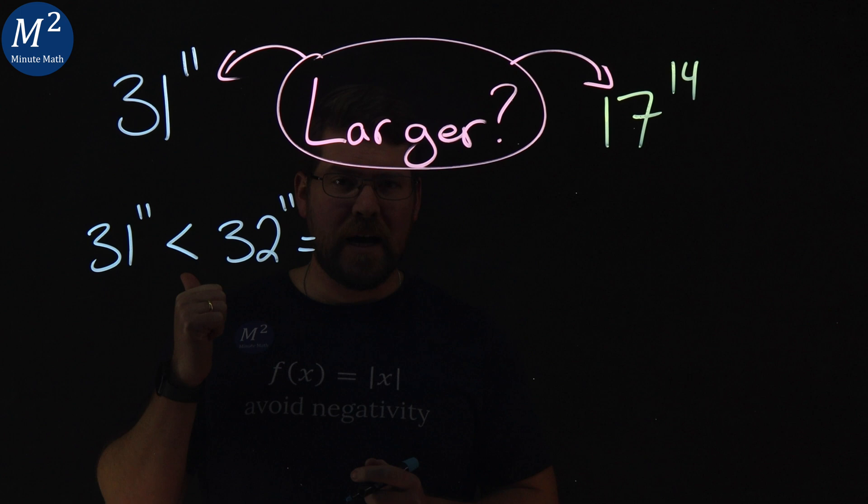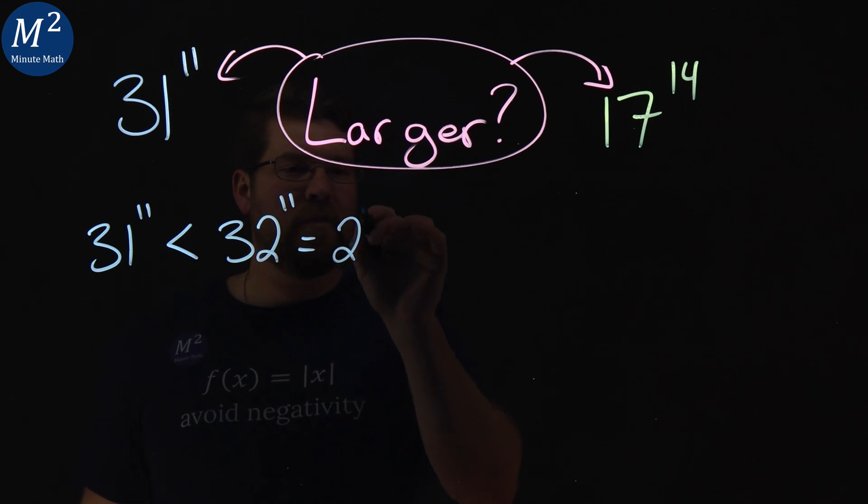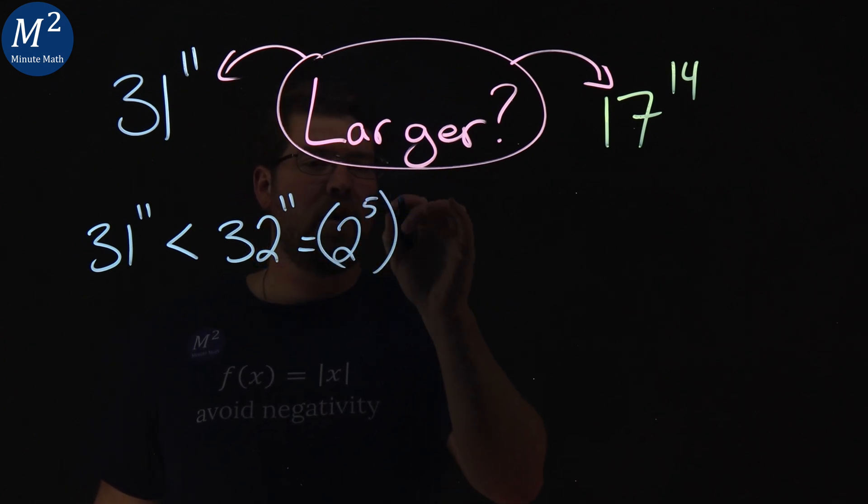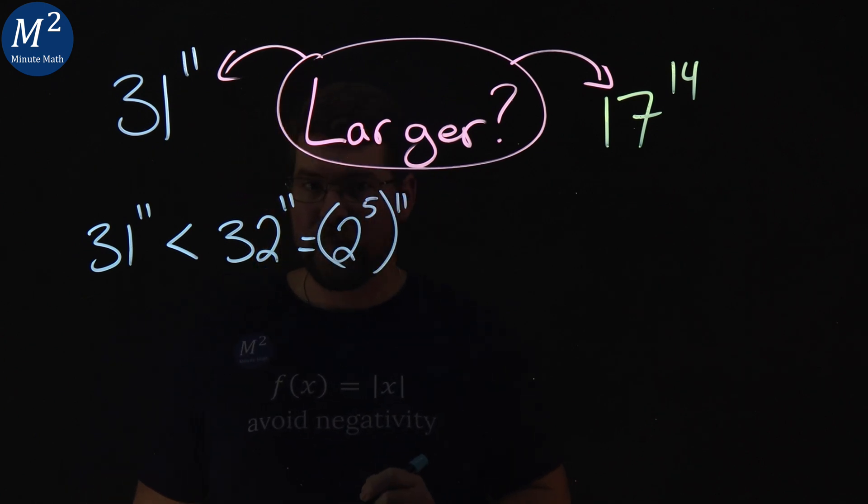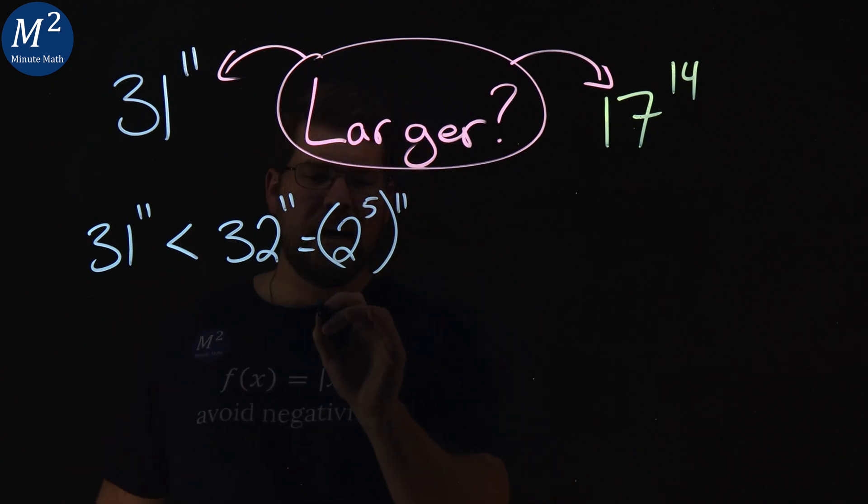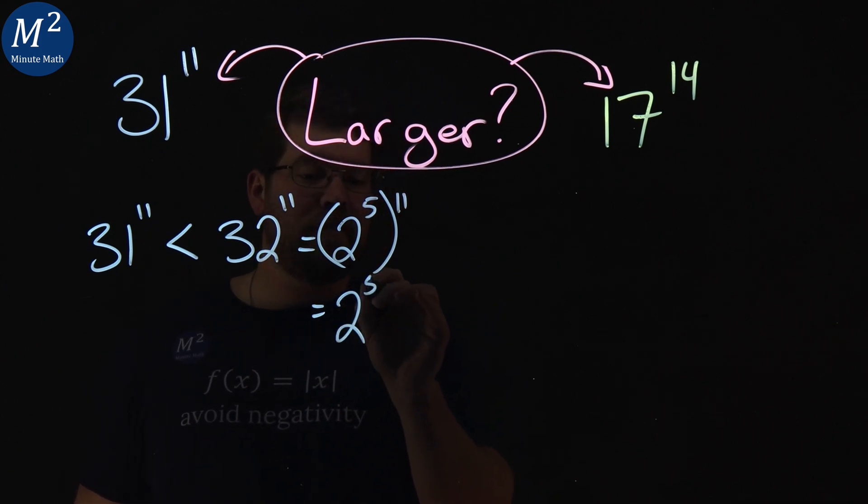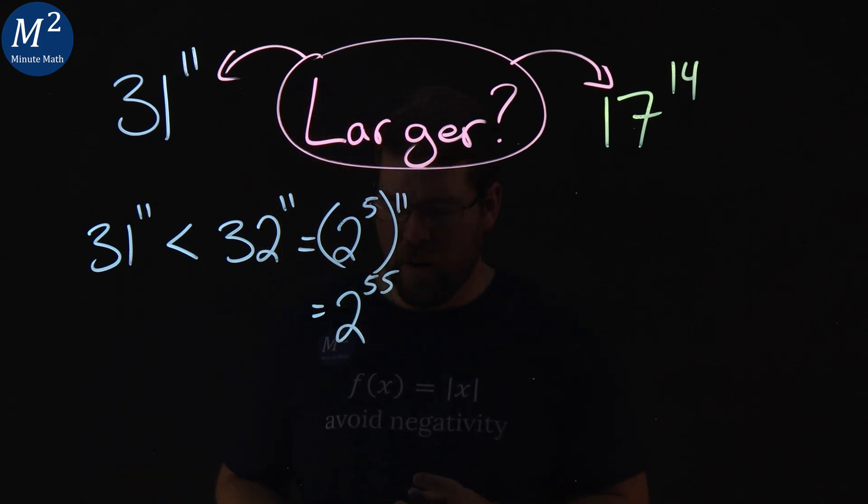Remember, 2 times 2 is 4 times 2 is 8 times 2 is 16 times 2 is 32. So we have 2 to the 5th power here all to the 11th power. And our rules of exponents says we can multiply 5 and 11. So we have that is equal to 2 to the 55th power.